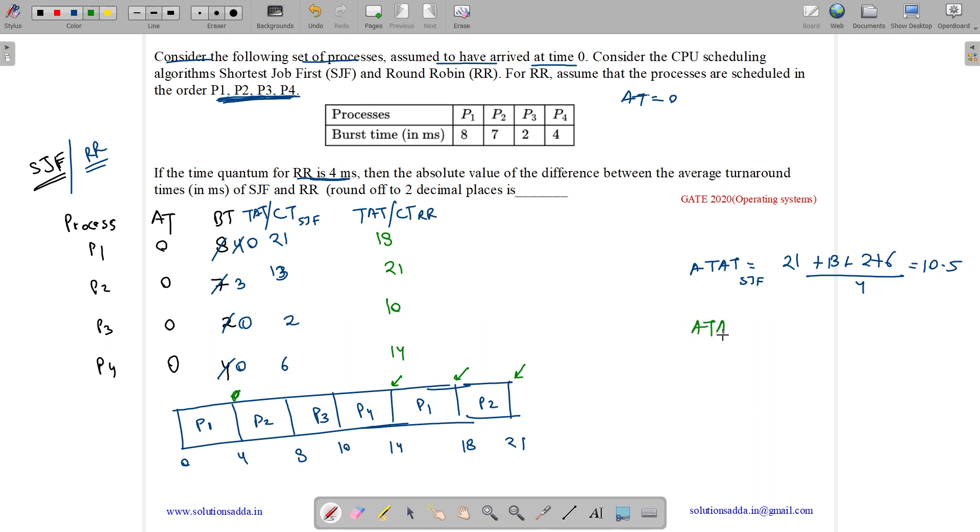So average turnaround time for round robin will be 18 plus 21 plus 10 plus 14 divided by 4. So it comes out to be 15.75.